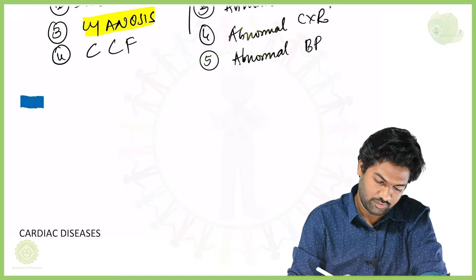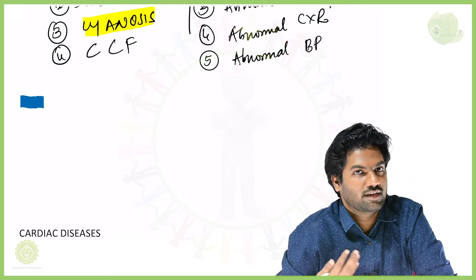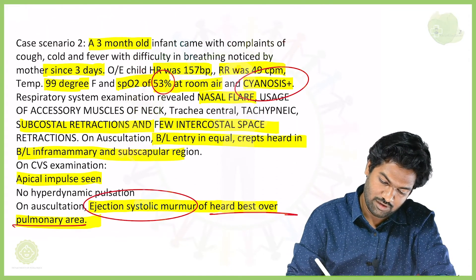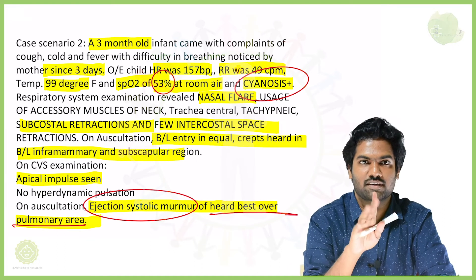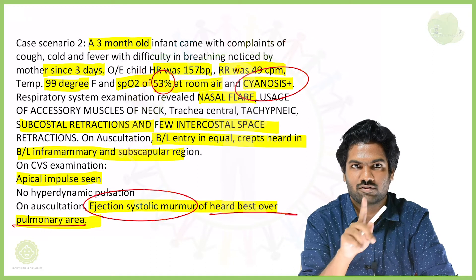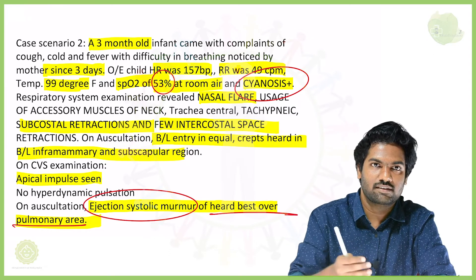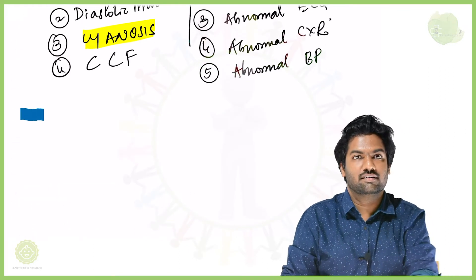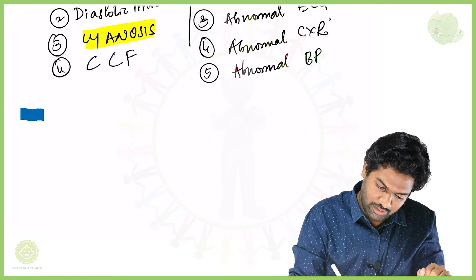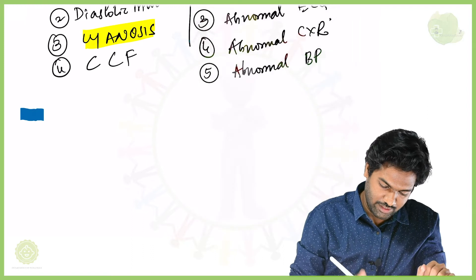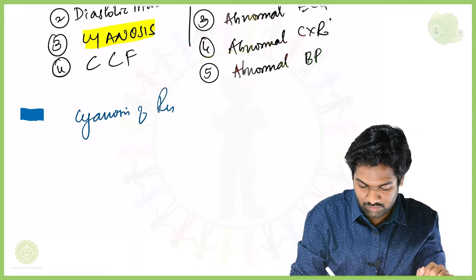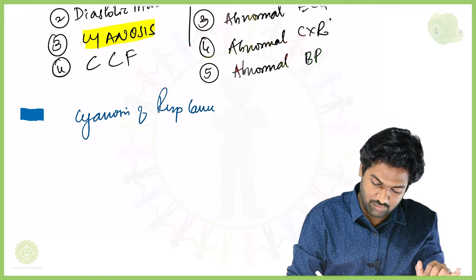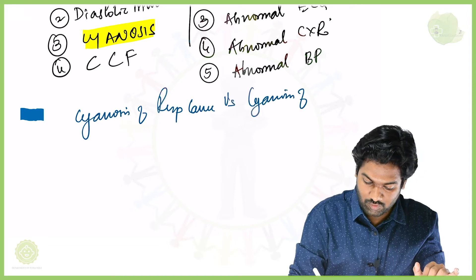According to NADA's criteria, we cleared the dilemma we had. In case scenario two, cyanosis is there — and one major criterion is enough for us to say it is cardiovascular, not respiratory. However, cyanosis can occur in respiratory causes as well. So how do we differentiate cyanosis due to a respiratory cause versus cyanosis due to a cardiac cause?